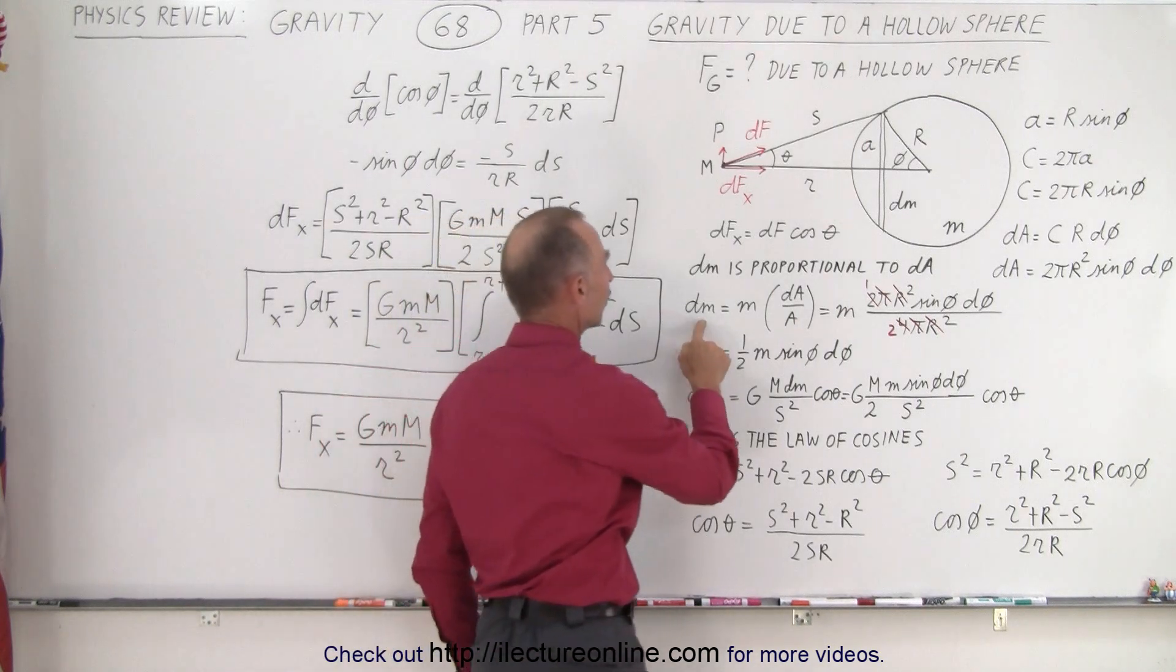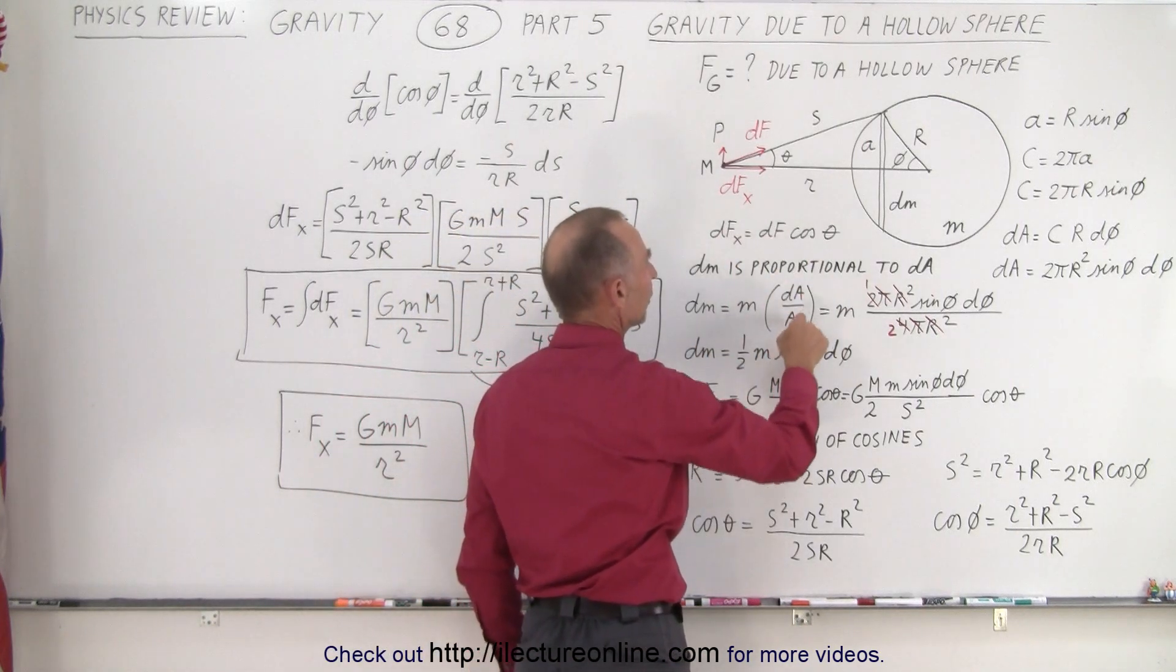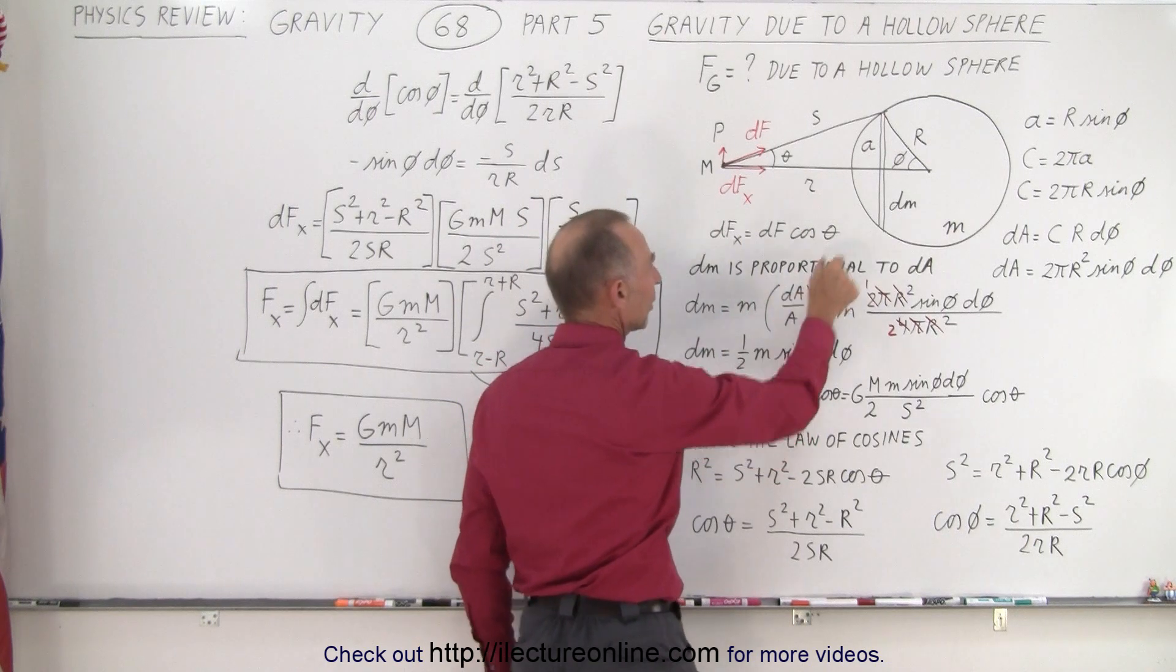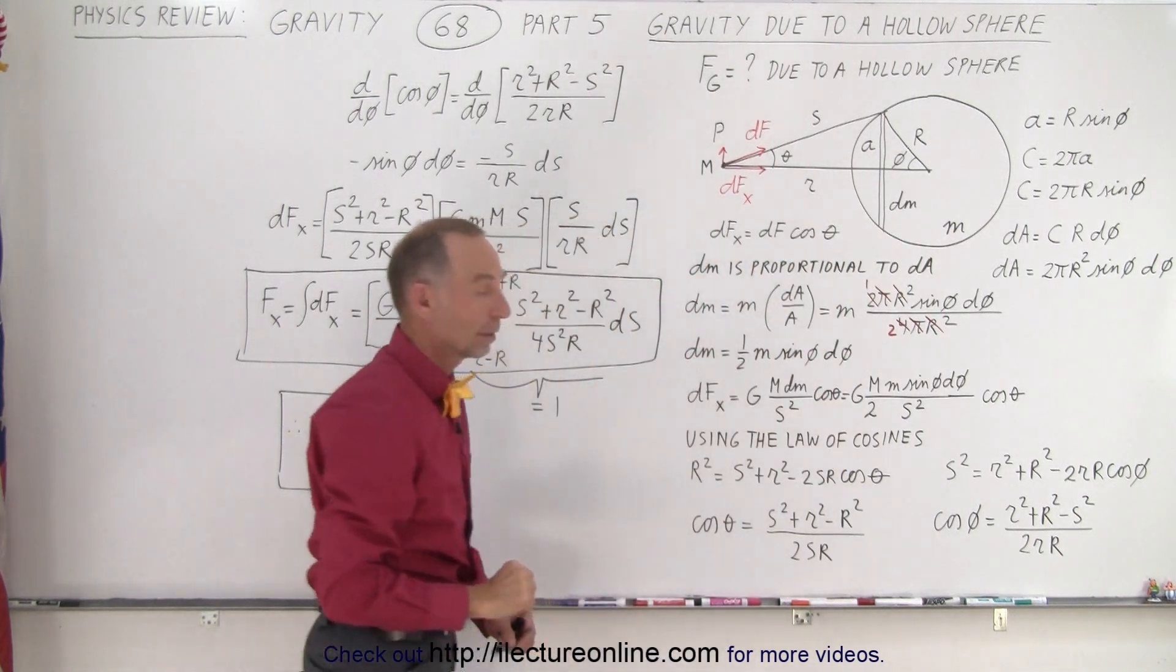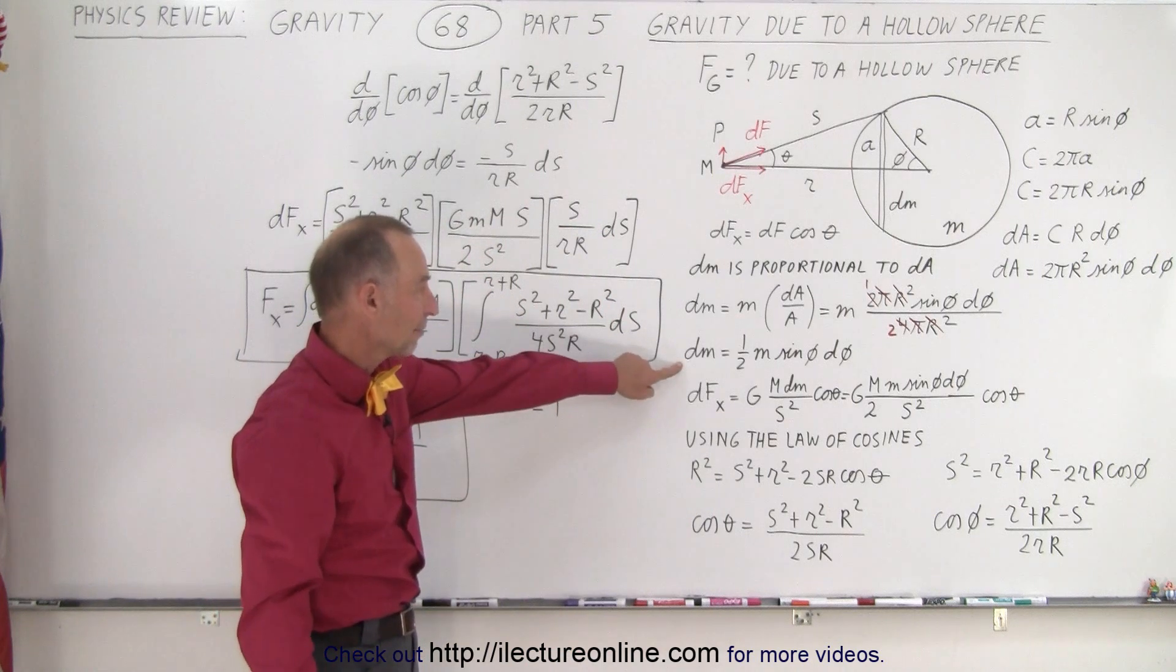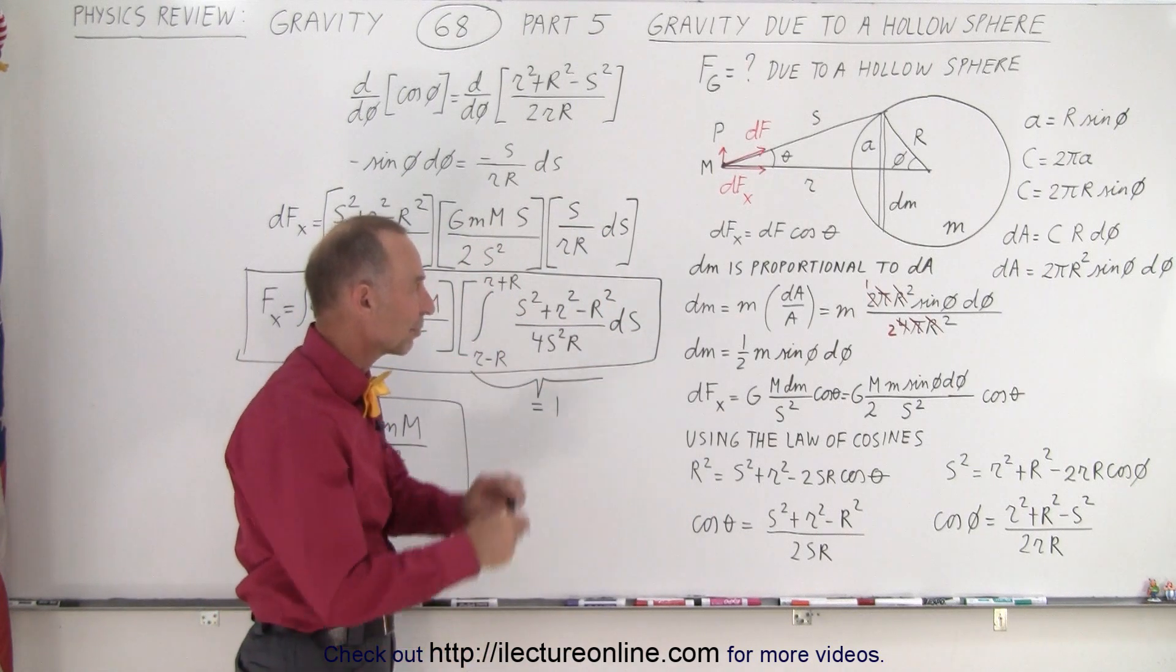And then to find the mass of the band, we take the mass of the whole sphere and multiply times the ratio of the area of the band divided by the area of the whole sphere. So once you do that, you have an equation for the mass of that band.